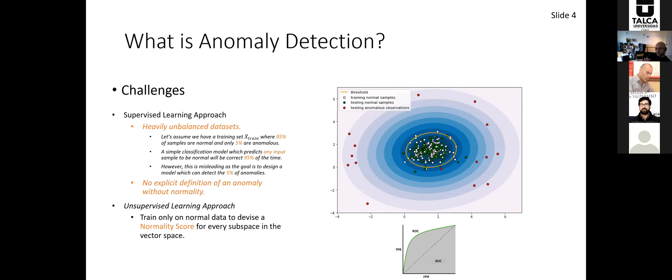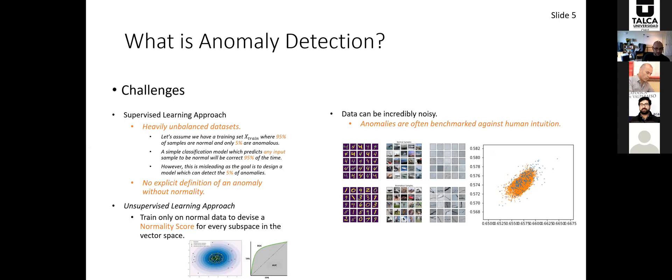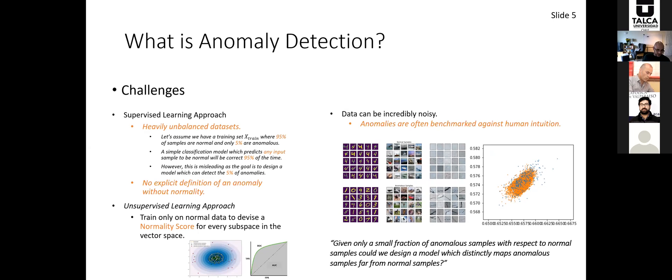This works fine in classic machine learning where everything falls into a vector space, but image anomaly detection is more complicated — normal and anomalous samples can be quite convoluted. If you view them in a two-dimensional space, you often find anomalous samples overlapping the normal samples, making it incredibly difficult to distinguish them. So we asked: with only a small fraction of anomalous samples relative to normal samples, could we design a model that distinctly maps anomalous samples far from normal samples? That's precisely what we attempted to do with ADEN.